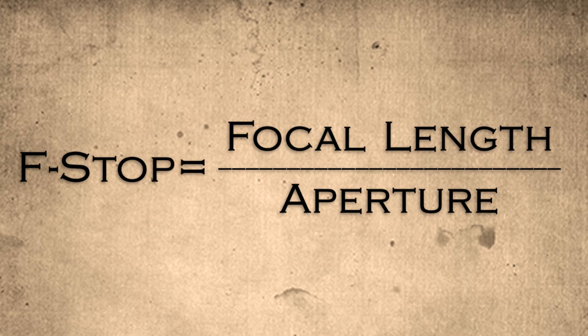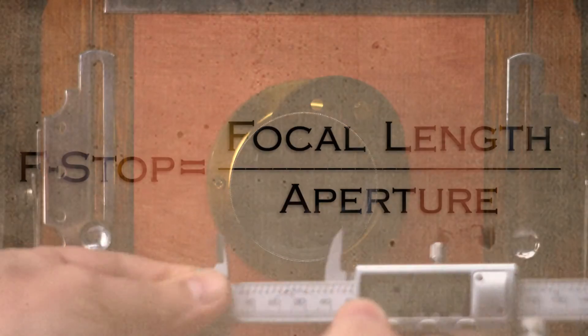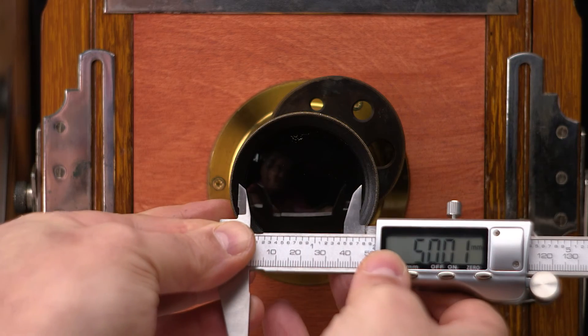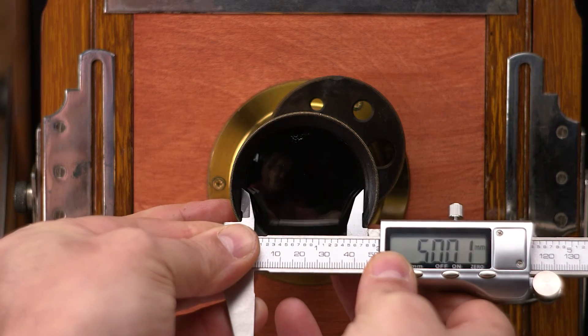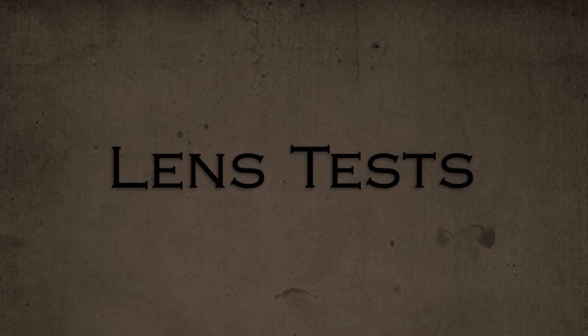We can estimate the f-stop of a lens by dividing the focal length by the aperture, which in this case is the diameter of the front element of the lens.